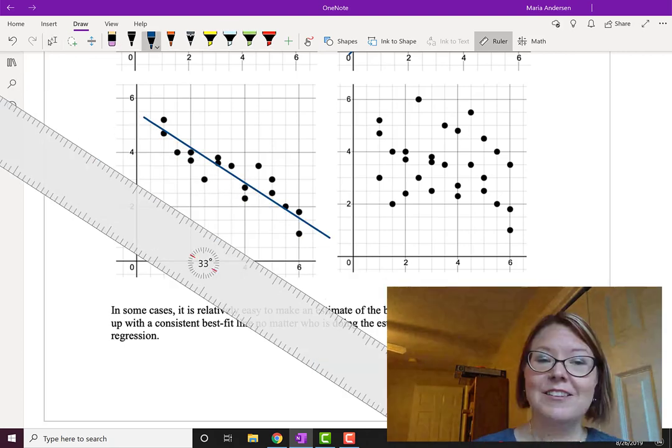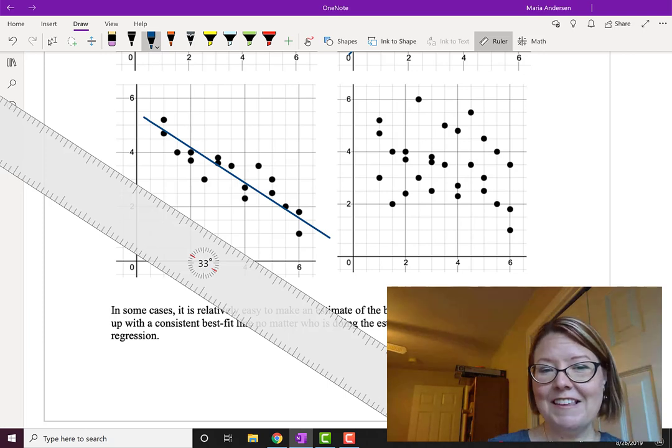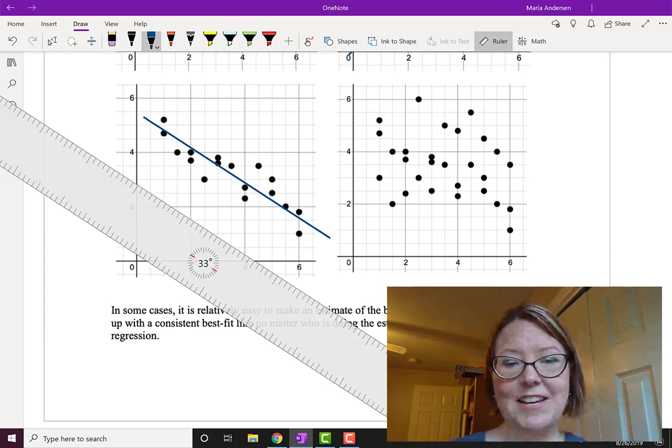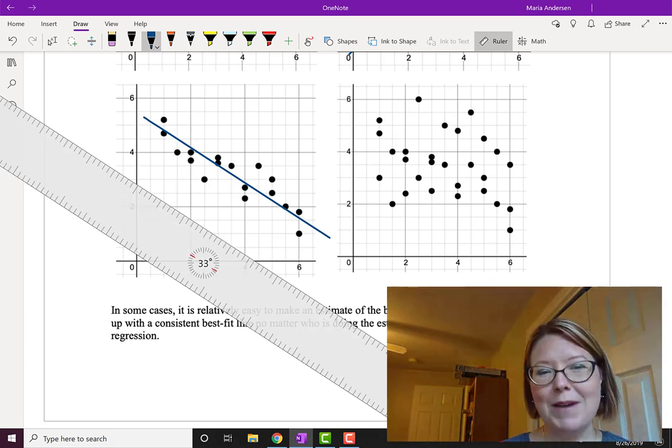If you count there will be eight points to the left of that line and nine points to the right of that line. A couple of those points look like they might actually be on the line.